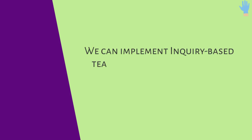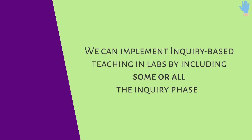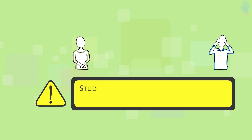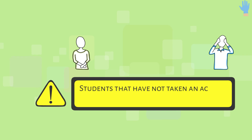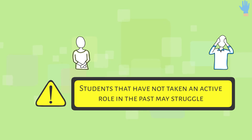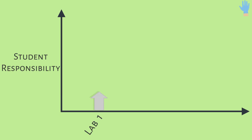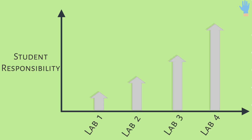We can implement inquiry-based teaching in labs by including some or all of the inquiry phases. Students that have not taken an active role in the past may struggle if given too much independence at once. To help students adjust, structure the course so that students have an increasingly autonomous role over the semester or as they progress through their program.